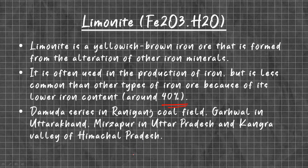Limonite is found in the Damodar series in Raniganj coal fields, Garhwal in Uttarakhand, Mirzapur in Uttar Pradesh, and Kangra Valley in Himachal Pradesh.